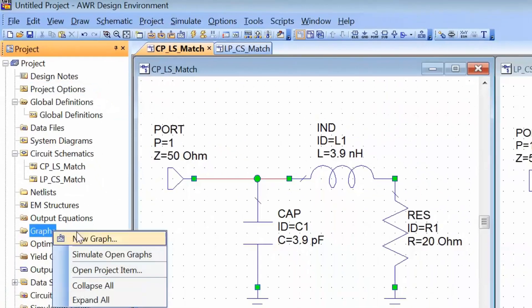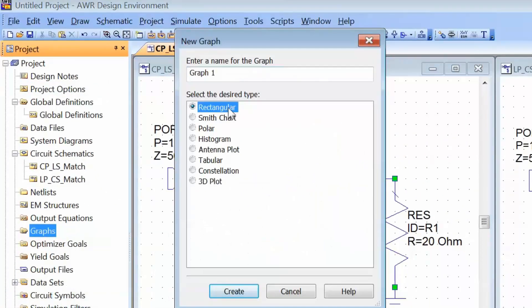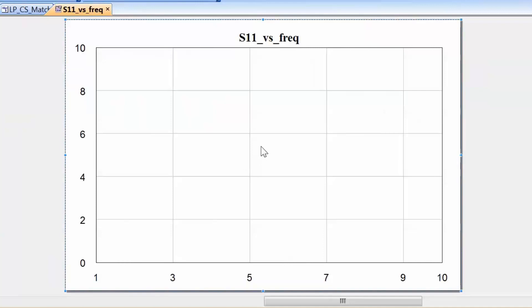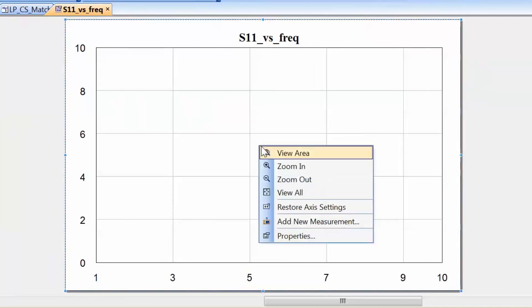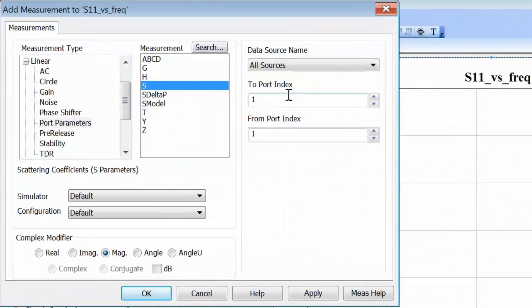Then we'll go to graphs, open a new graph, choose rectangular as a type, and then we'll call it S11 versus frequency. First of all we have to set up a measurement on the graph. So let's right click, select add a new measurement. We'll choose S11 because we want to see the reflection coefficient. In terms of the data source name we'll keep it to all sources because we want to be able to see the reflection coefficient versus frequency from both of our matching networks. Also we'll select the units to be in dB because this is the usual way S11 is represented. So let's tick dB, click on apply and then ok, and then simulate.